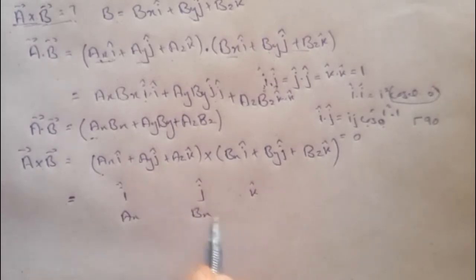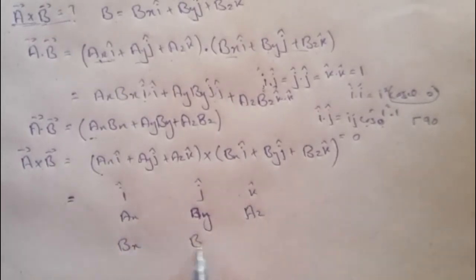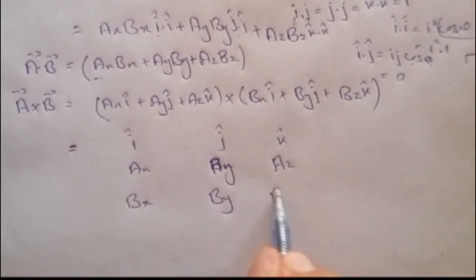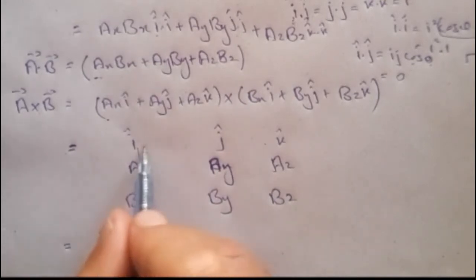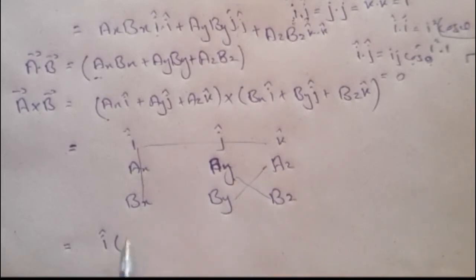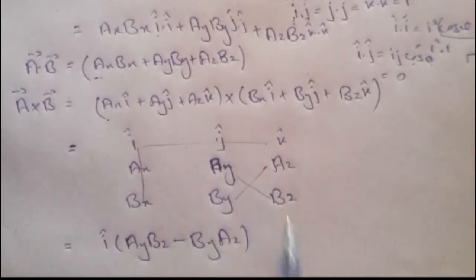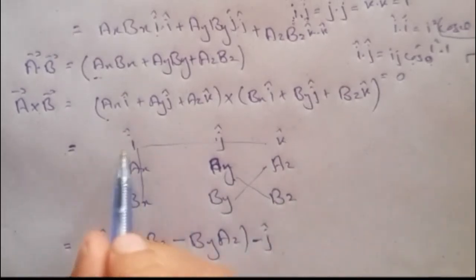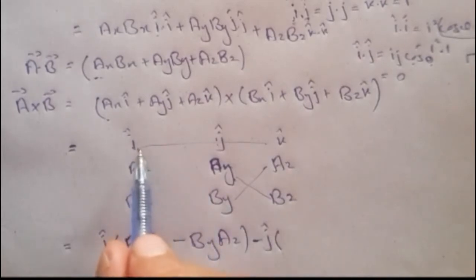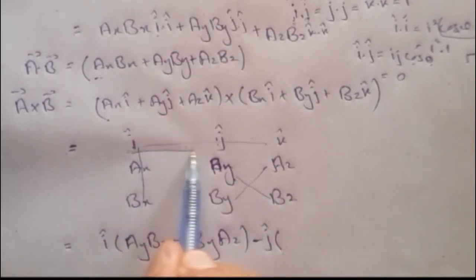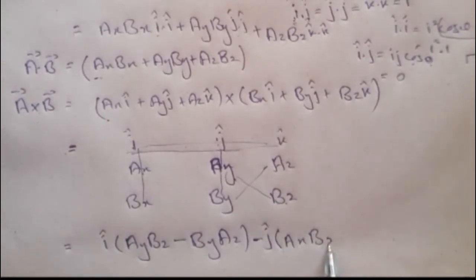Setting up the determinant with components ax, ay, az in the second row and bx, by, bz in the third row, solving for i gives i times (ay·bz minus by·az). For the j component, the sign is negative in the determinant expansion, so we write minus j times (ax·bz minus az·bx).